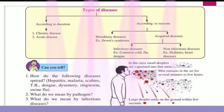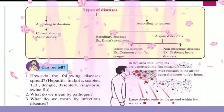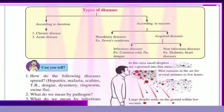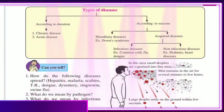According to duration, diseases are classified as chronic disease and acute disease. According to reasons, they are classified as hereditary diseases — for example, Down syndrome — and acquired diseases. Acquired diseases are further divided into two types: infectious diseases and non-infectious diseases.